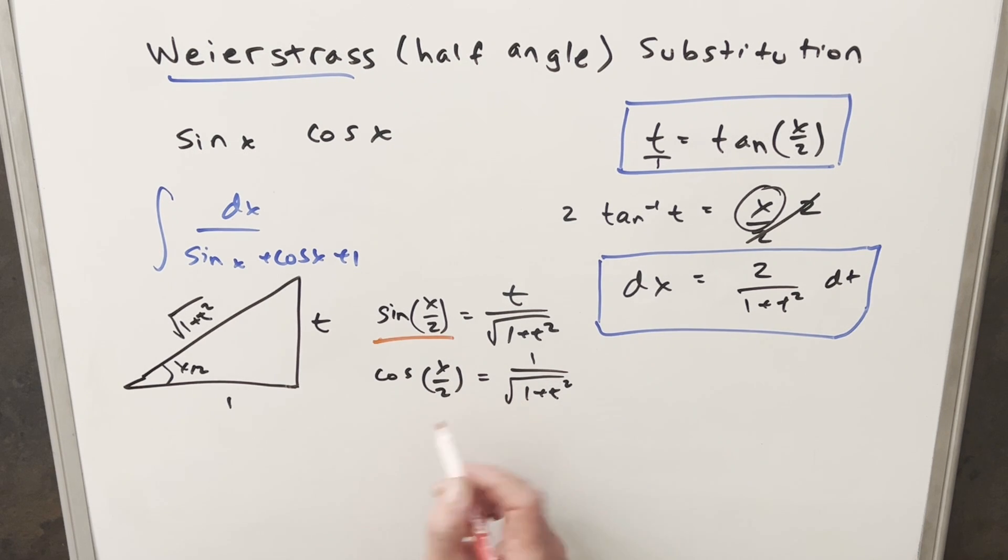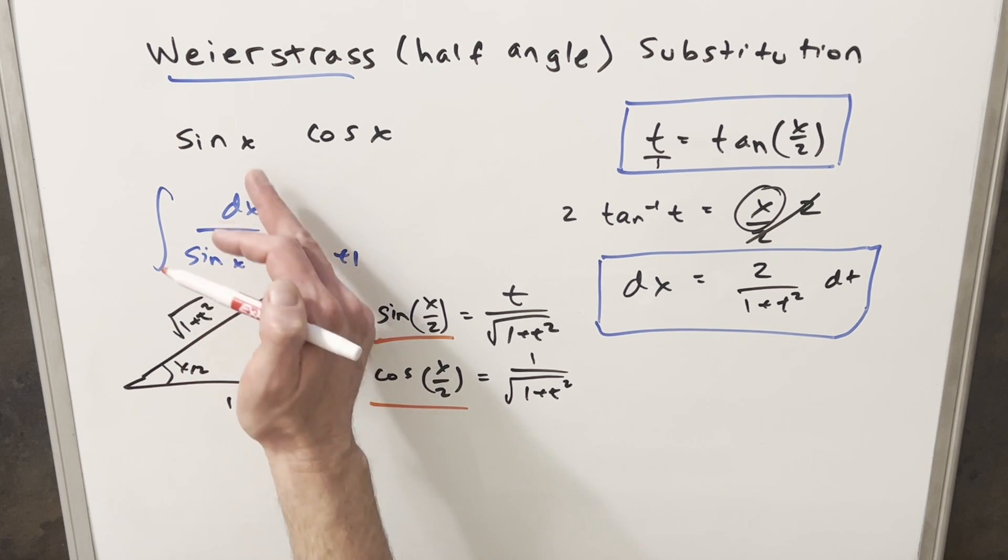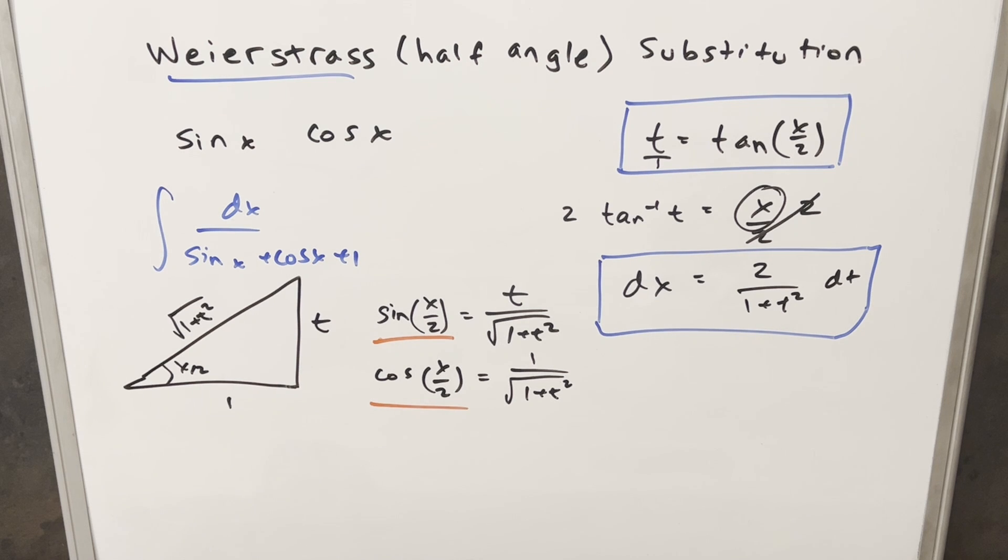So now that we've found our value for sine of x over 2 and our value for cosine x over 2, we just need to use some trig identities to get this back to find a value for sine of just x and cosine of x. And so what we'll do for that is just use our double angle formulas for sine and cosine. So here we have our double angle formula for sine and cosine. And this gets me a value for sine of 2x and cosine 2x, but we want sine of x and cosine x.